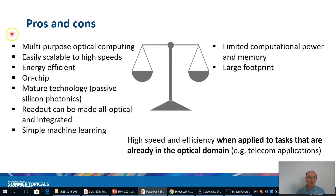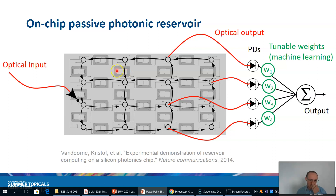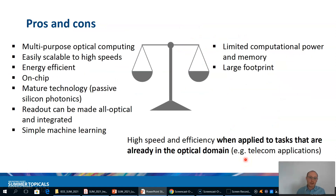Let's quickly go through the pros and cons. The advantages are that it provides multipurpose optical computing, and it is easily scalable to higher speeds — if you decrease the length of the delay lines, you can increase the speed at which this chip can work. The only limitation is the modulation of the input and the detection of the electric output signal. It is also energy efficient because it is completely passive with no power-hungry active components on the chip, and it can be fabricated with mature technology such as passive silicon photonics.